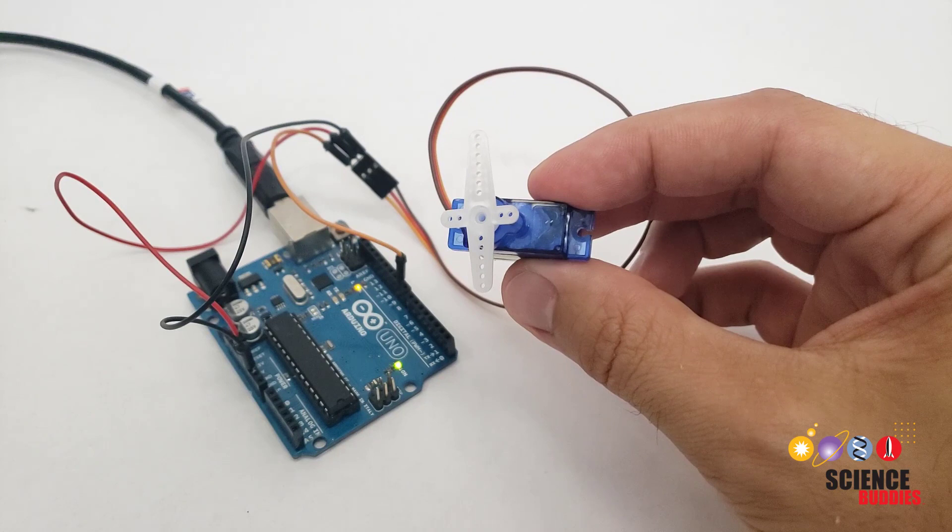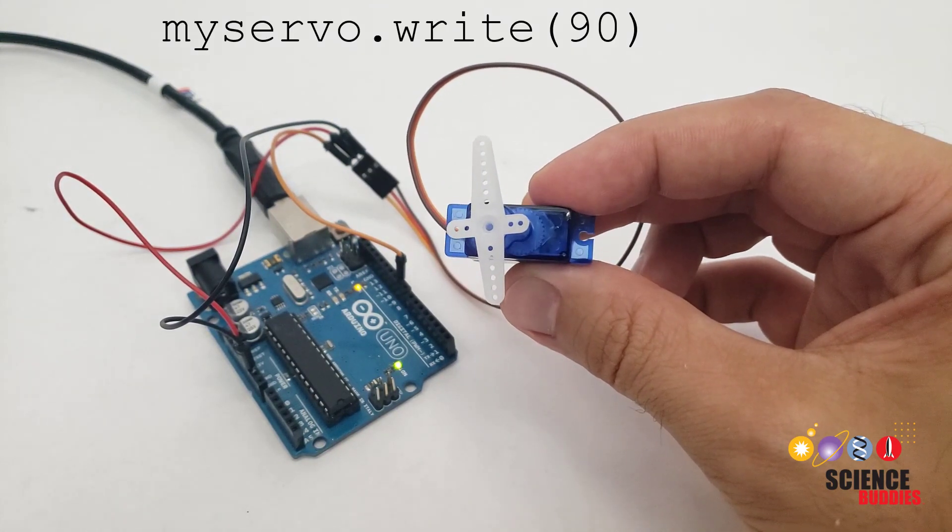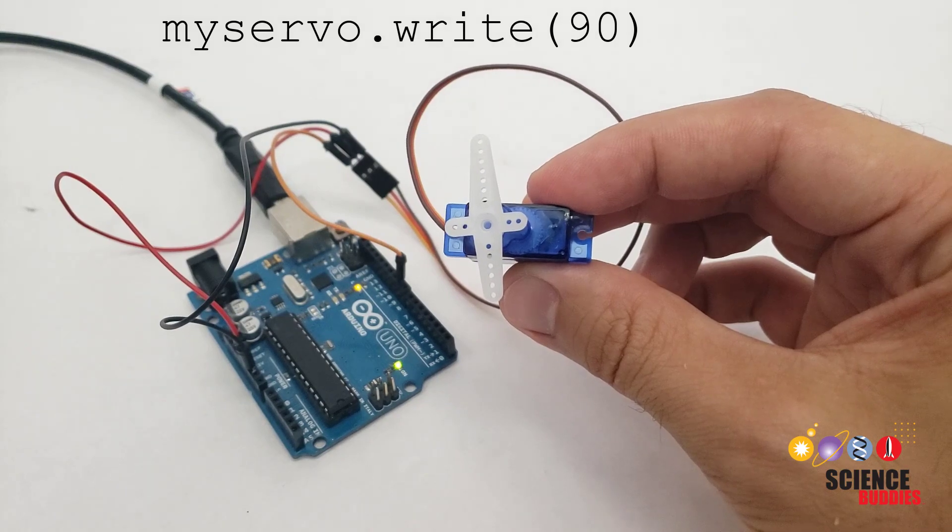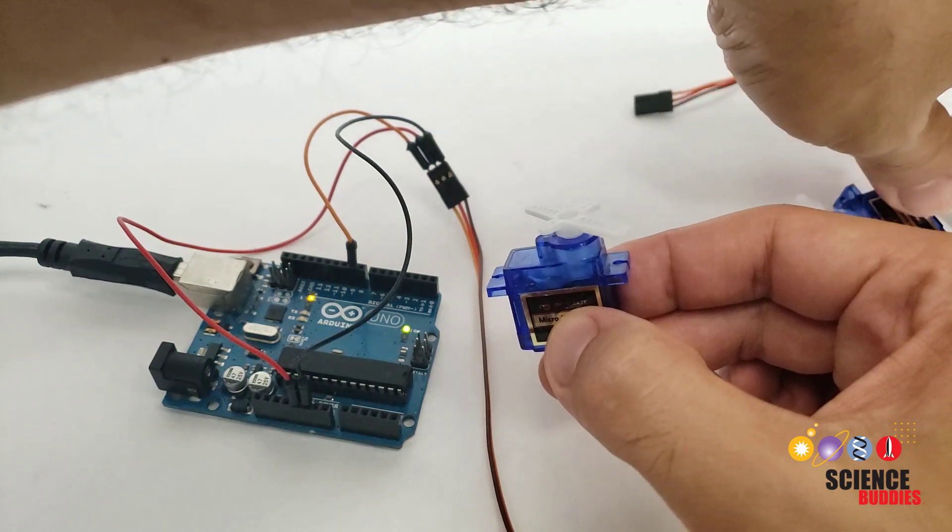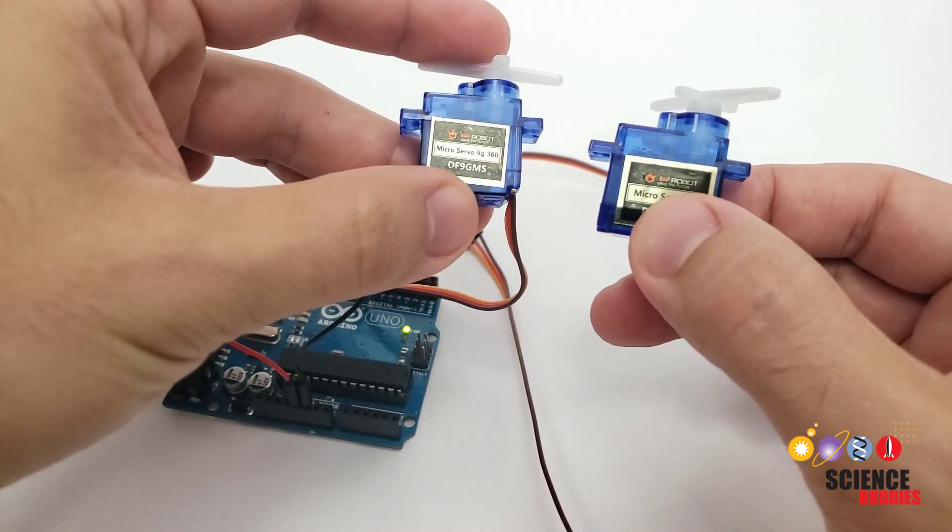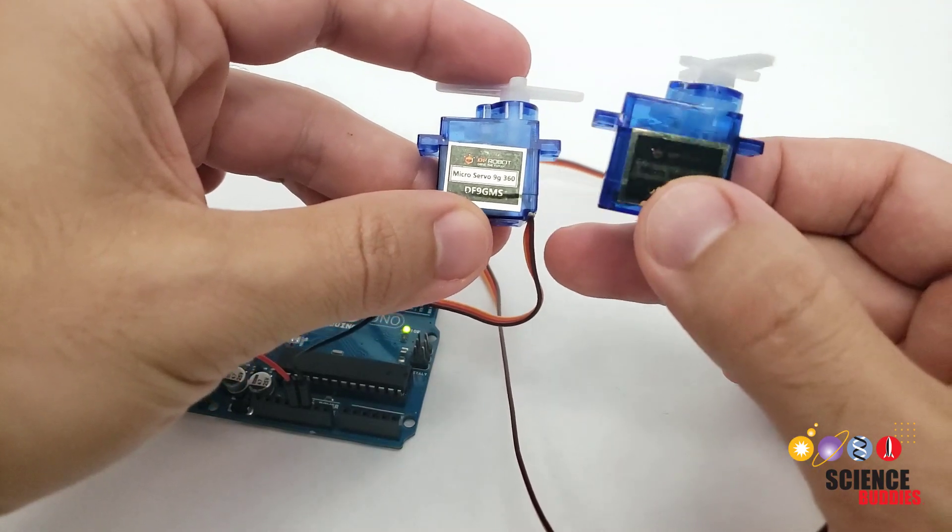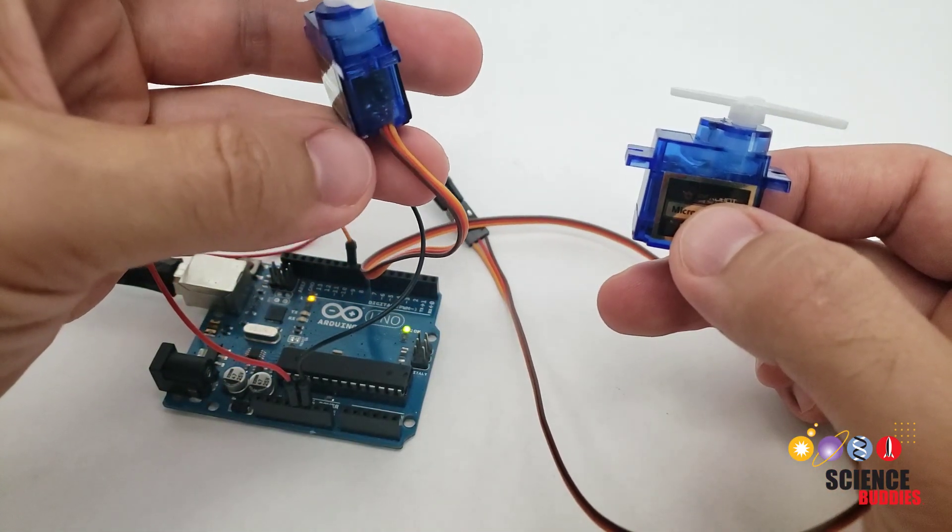If you want your servo to stay in a constant position, you just send it a single number. For example, sending 90 will make it stay centered in the middle of its range. So here I have switched back to the oscillate code, but now I am going to switch over to the continuous rotation servo, which again looks almost exactly the same, but has this extra 360 on the label.